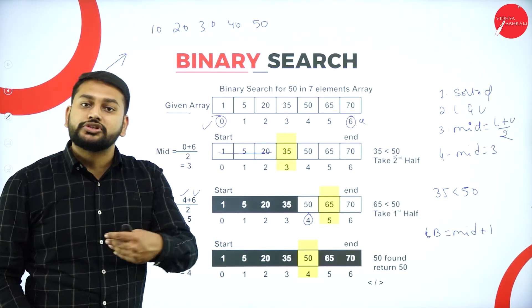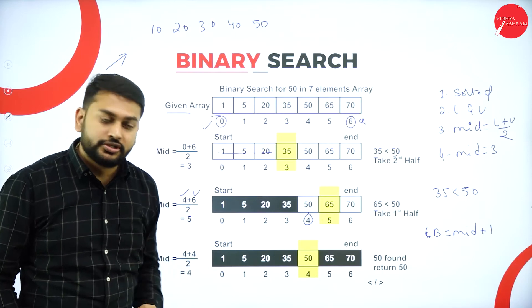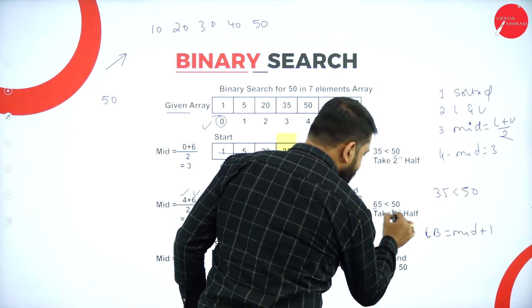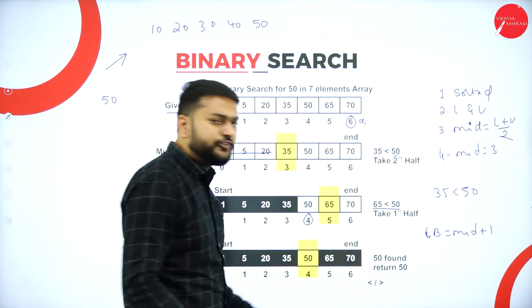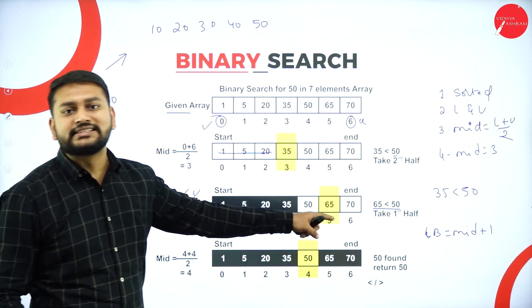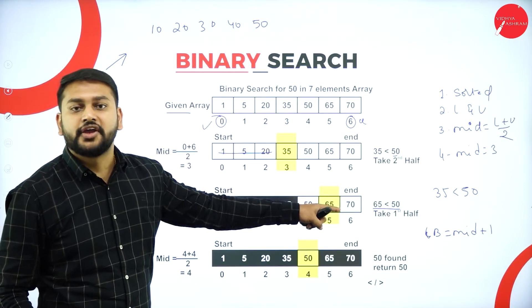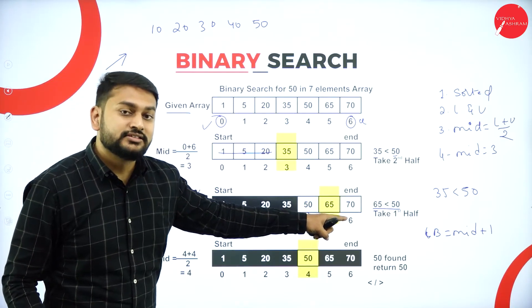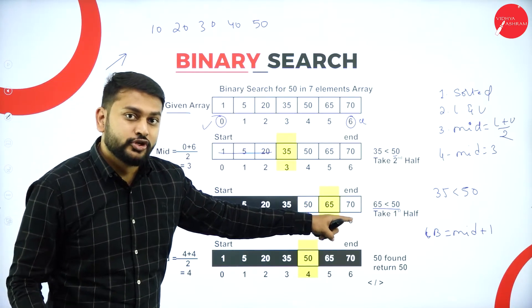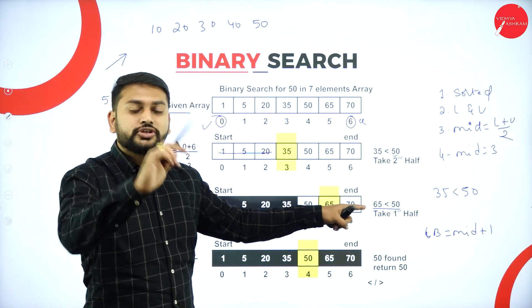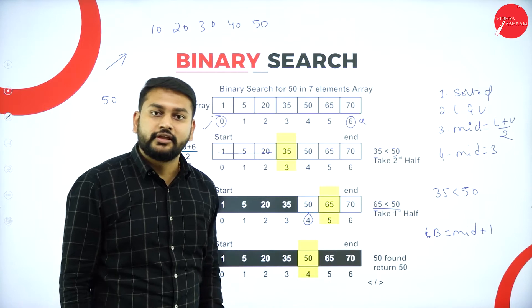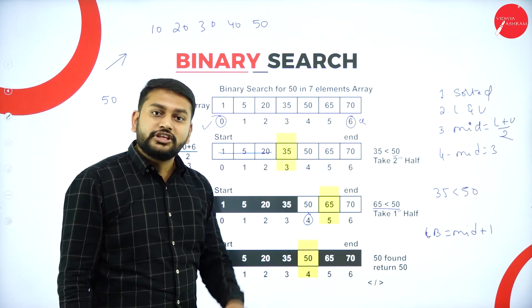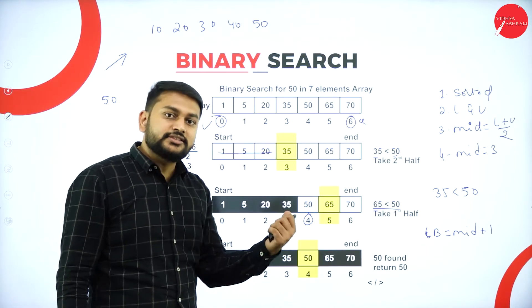I will now compare the new mid value with the value I want to search. 50 is less than 65. So 50 is less than 65 — yes, that is true.